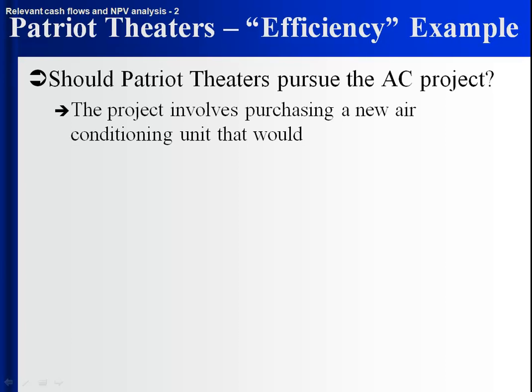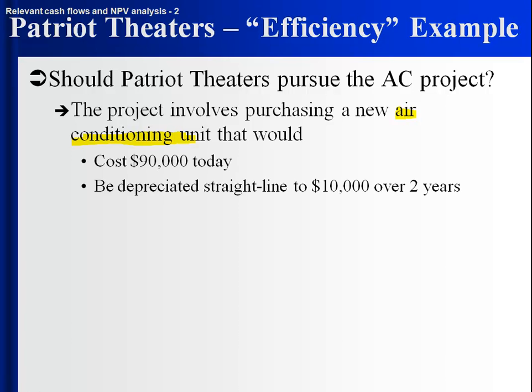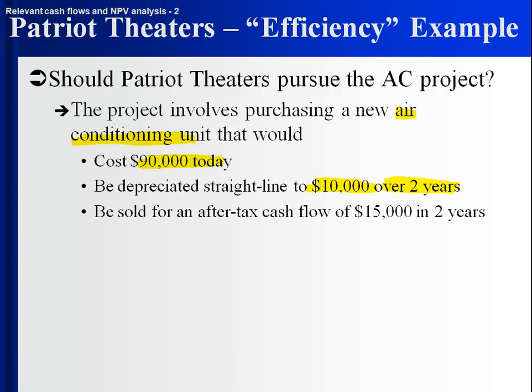So here it's the AC project. We've got Patriot Theaters — they're considering buying a new air conditioning unit to increase efficiency. It would cost $90,000 today, depreciated straight line to $10,000 over two years. In two years, it'll be sold for an after-tax cash flow of $15,000. So we know the equipment details, and we know we'll get $15,000 after subtracting taxes from the sale proceeds.